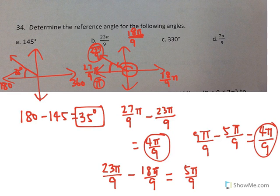So either way, the reference angle, theta prime, is going to be 4π over 9, so that's part B. And we're going to do C and D on the next screen.